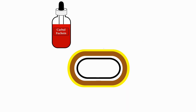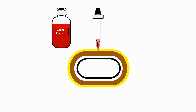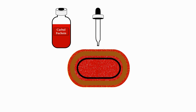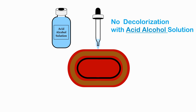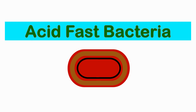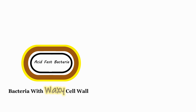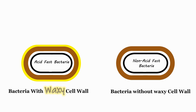If you stain these bacteria with an appropriate stain such as carbolfuchsin, the stain binds to the bacteria very strongly. Once the stain is bound to the cell, it is not removed even with strong decolorizers such as acid-alcohol solution. Bacteria which resist stain decolorization with acid-alcohol solution are known as acid-fast bacteria.